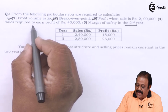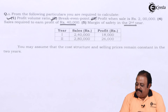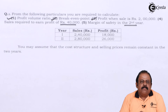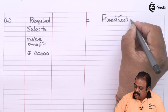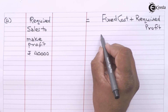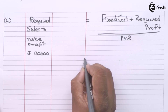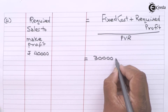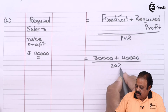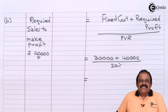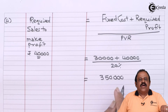The next part asks for the sales required to earn a profit of ₹40,000. The formula for required sales is: fixed cost plus desired profit, divided by PV ratio. That is ₹30,000 plus ₹40,000, divided by 20%. The required sales to earn a profit of ₹40,000 is ₹3,50,000.